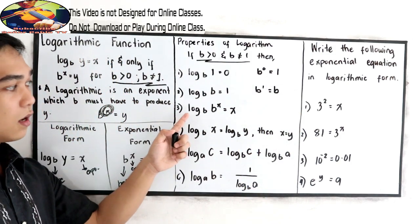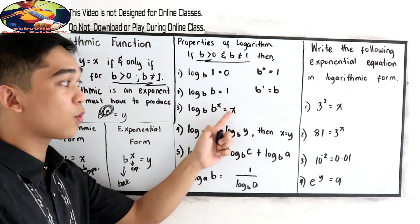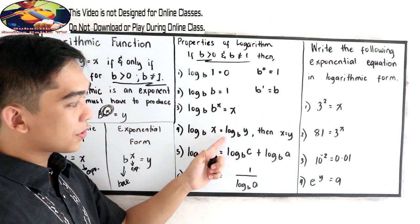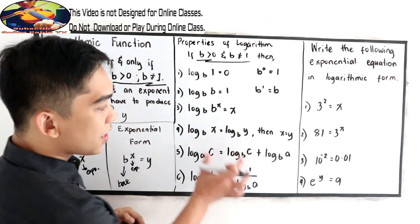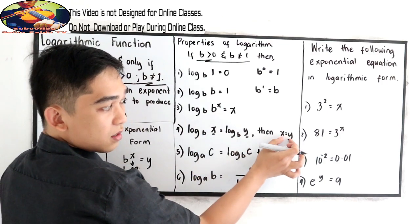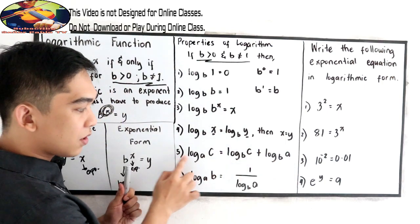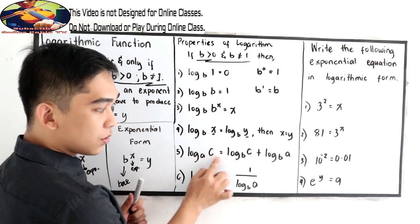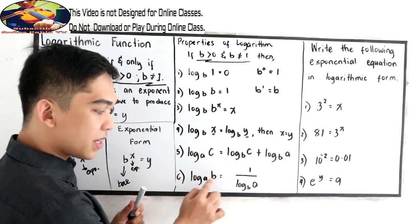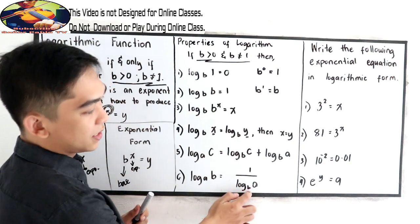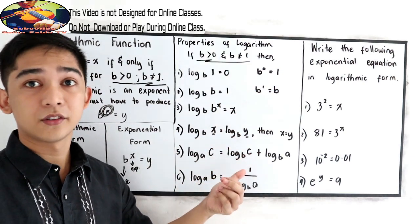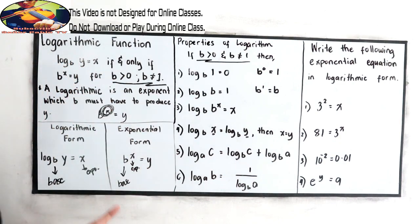Property 3 — log B raised to x, base B, is equal to x. Property 4 — log x base B is equal to log y base B; if this condition holds, then x and y are equal. Property 5 — log c base A is equal to log c base B plus log a base B. Property 6 — log b base A is equal to 1 over log a base B. In many cases we will just use properties 1 through 4.